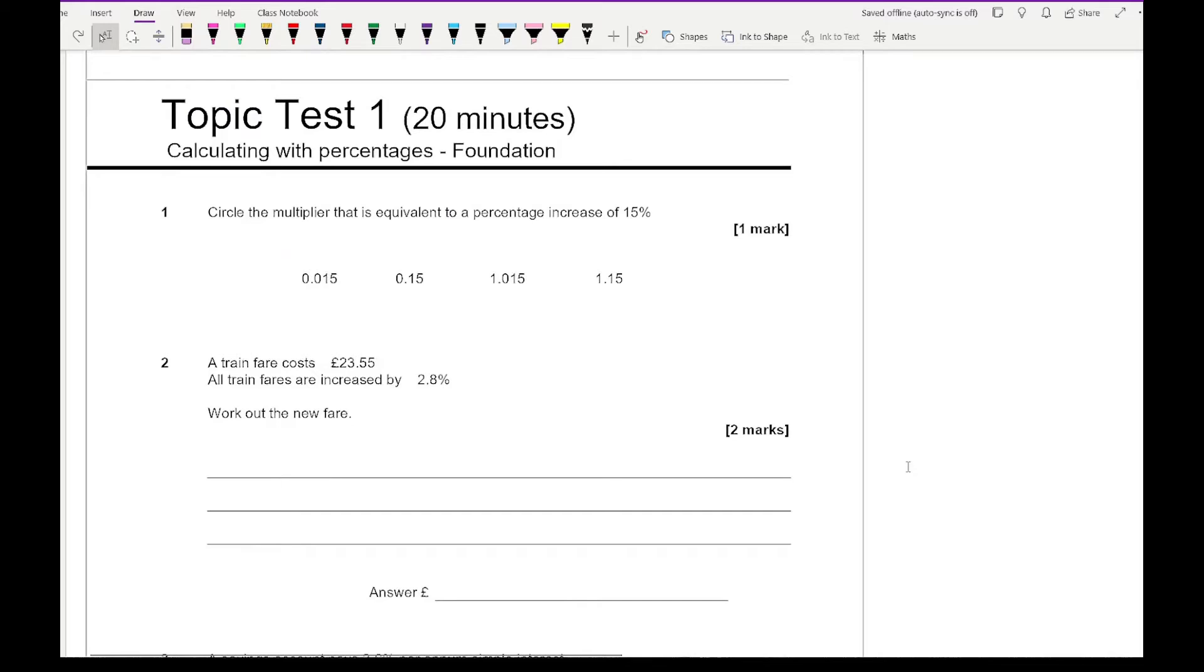The very first question says circle the multiplier that is equivalent to the percentage increase of 15%. When doing decimal multipliers you always start with 100%. We're adding on 15% because we're increasing, that gives us a total of 115% and that as a decimal is 1.15 which is our fourth option.